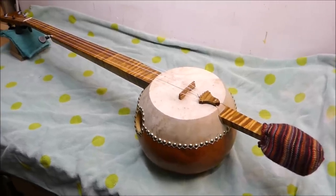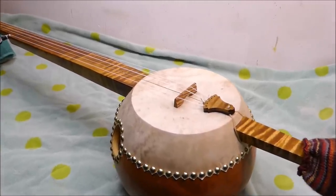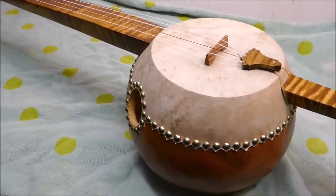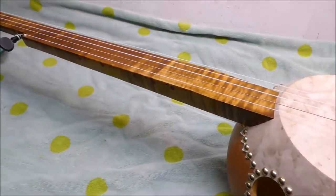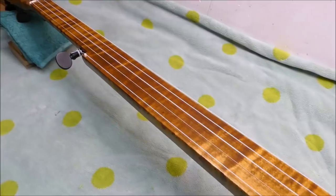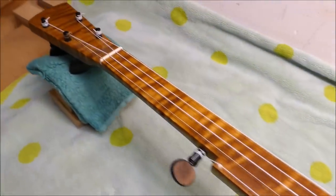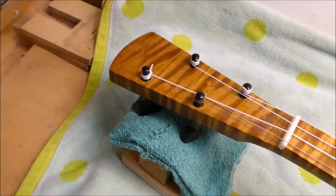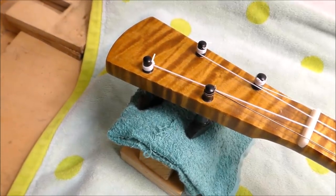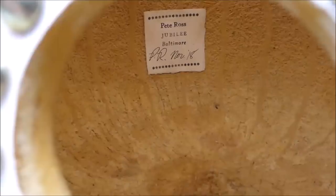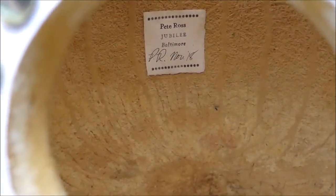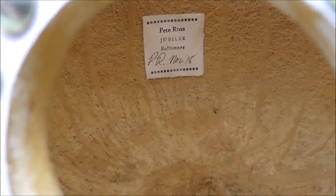Well hey there gang, got something interesting today. It's probably not one that you see all that often. This is a gourd banjo, an early style of banjo. Look at that piece of flame maple for the neck, isn't that pretty? Really nicely crafted. It was made a couple of years ago by Pete Ross of Baltimore, Maryland.